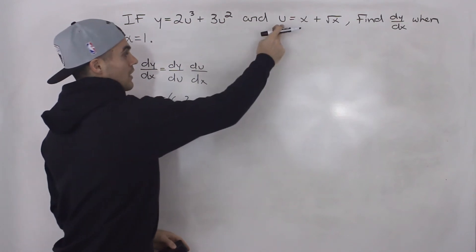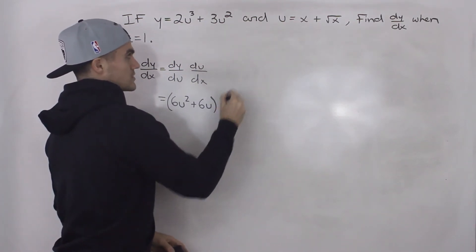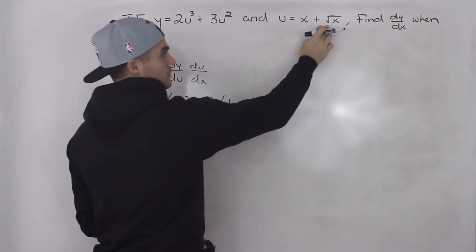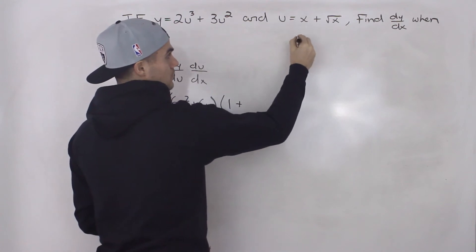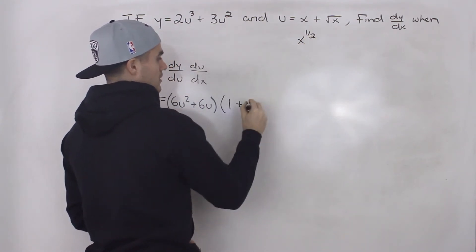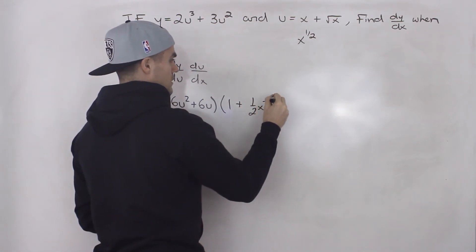And then the derivative of du by dx is just going to be 1, or the derivative of x is just 1, plus the derivative of the square root of x. So square root of x we can rewrite as x to the power of a half, bring the half down, and then subtract 1 from the exponent.